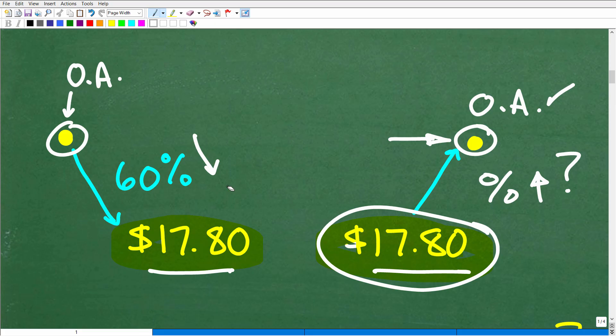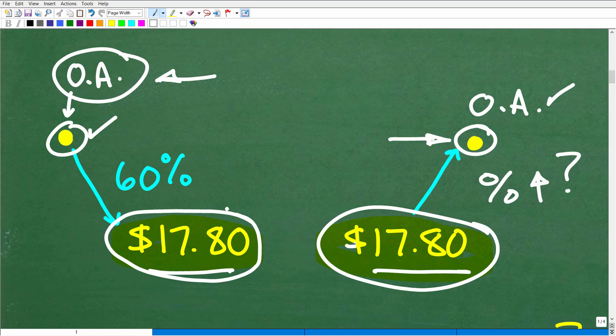In order to solve this problem, we're certainly going to need the original amount. You've got to be very careful here because the stock fell 60% from whatever its starting point was. Does $17.80 represent 60% of the price? This is a real tricky part of this problem. The stock fell 60%, so this is how much a 60% reduction in price is. This really just represents 40% of the original amount. The stock fell 60%, meaning we only possess 40% of the original price. So $17.80 is 40% of the original amount.